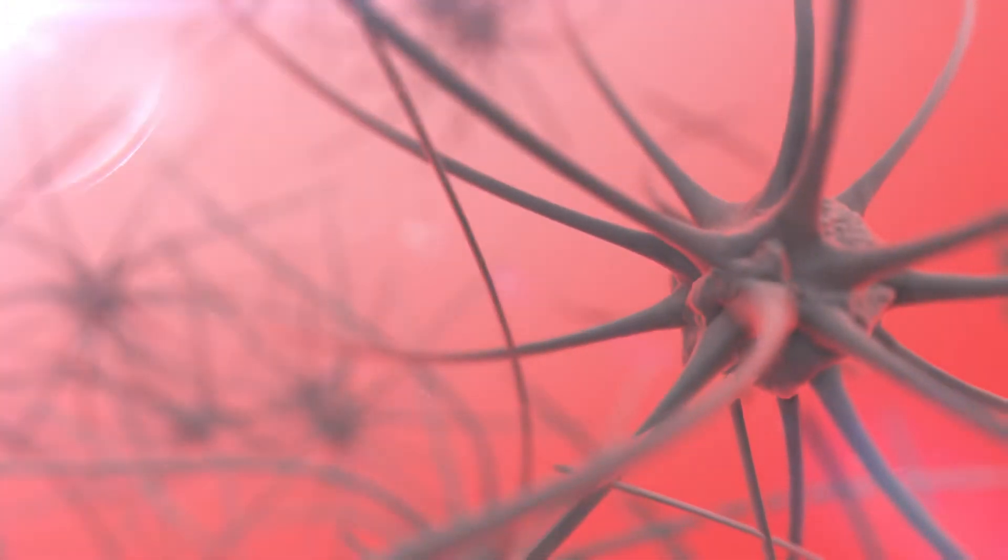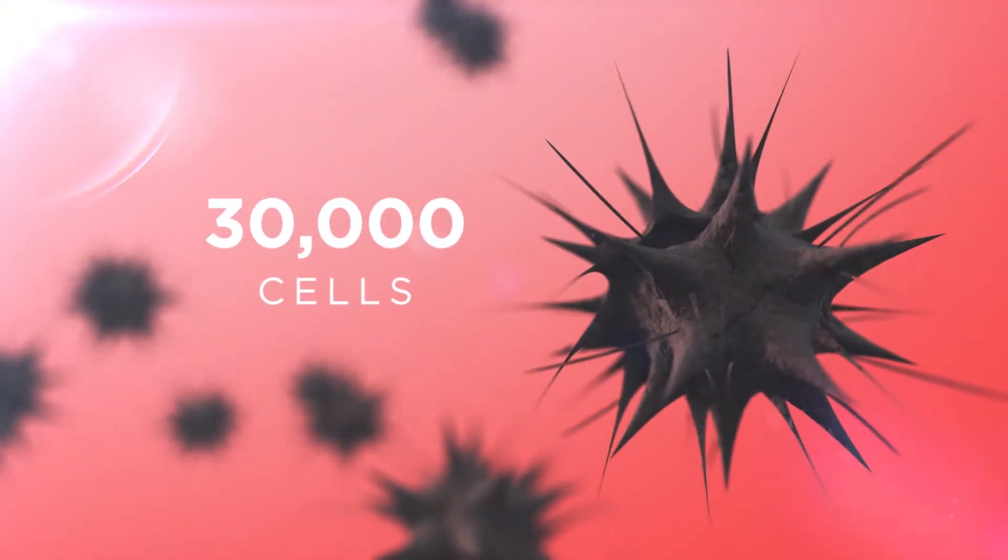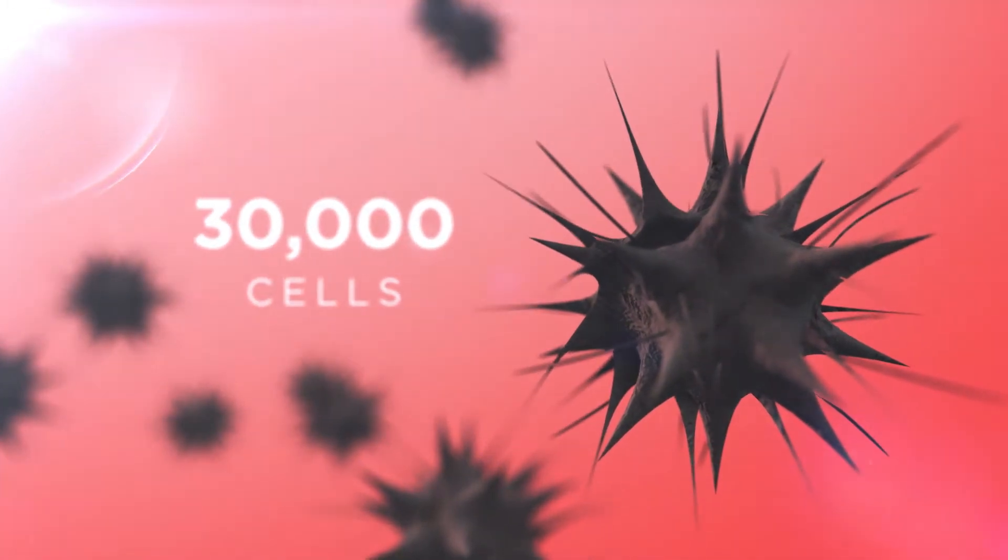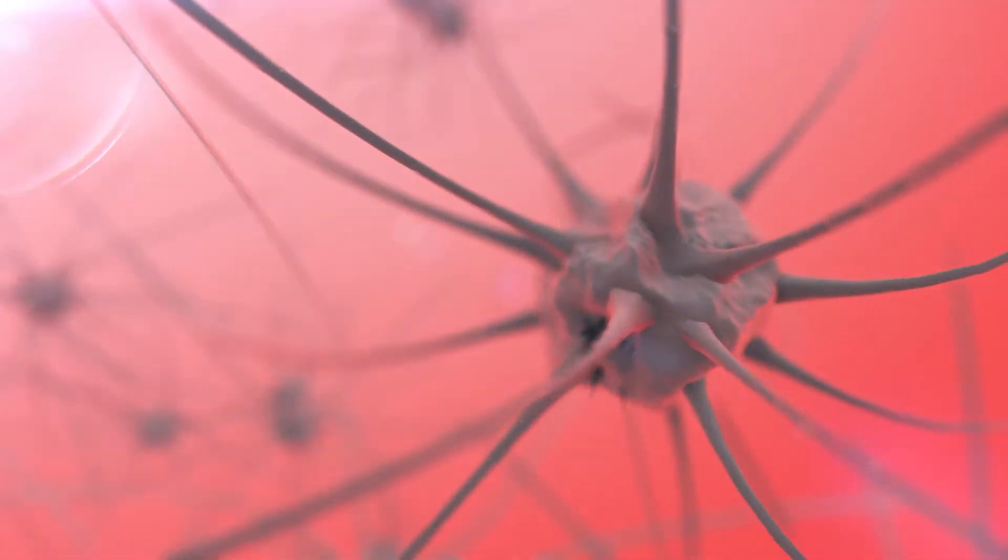Left untreated, your brain can lose over 30,000 cells every second. But if treated fast enough, the effects of a stroke can be reversed.